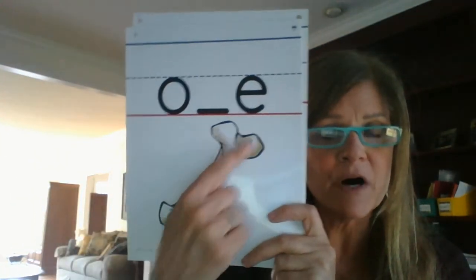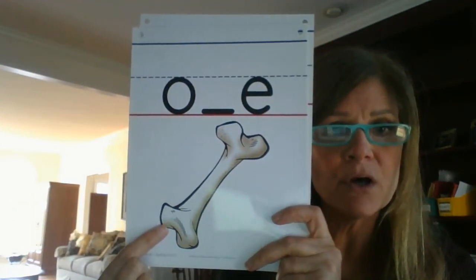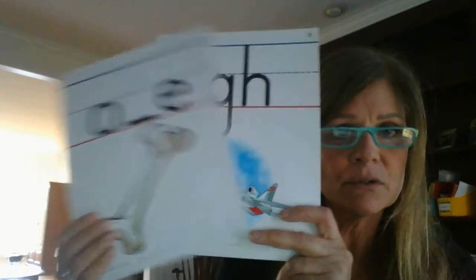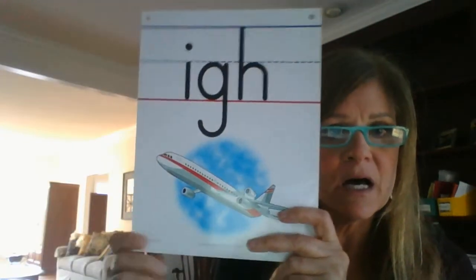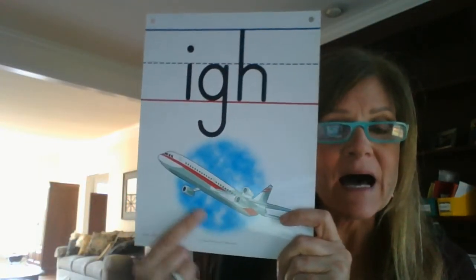O with bossy E, Bone — O. I, G, H, Flight — I.